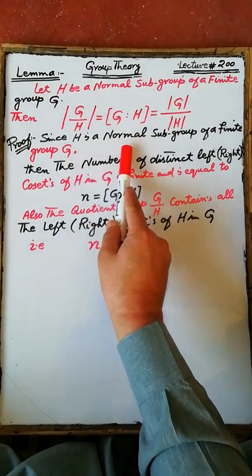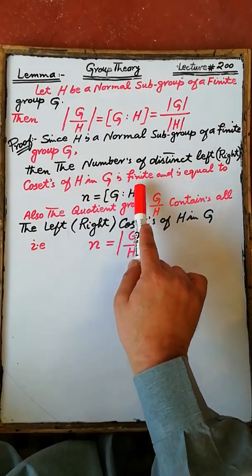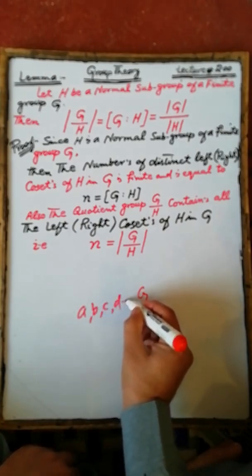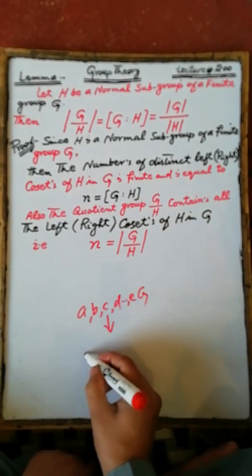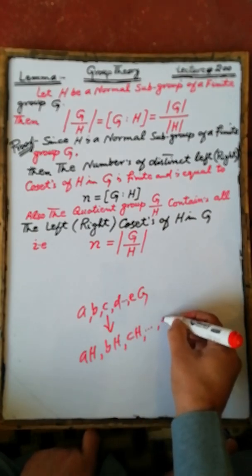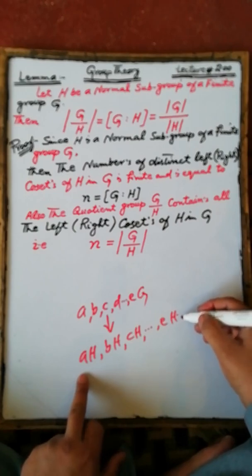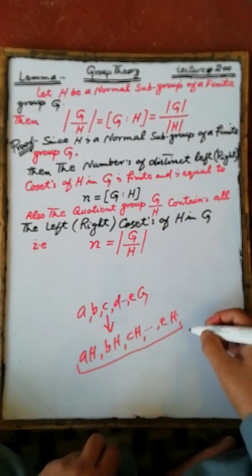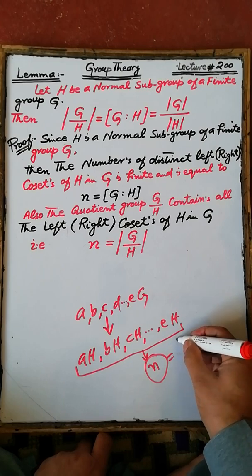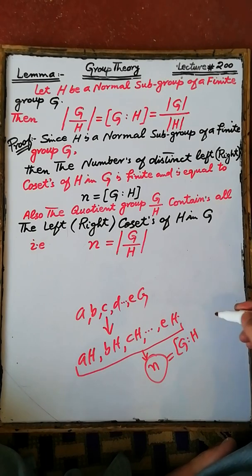Since H is a normal subgroup of a finite group G, the number of distinct left or right cosets of H in G is also finite, because the elements of G are finite. Therefore the number of left or right cosets determined by elements of G is also finite. Suppose the number of left or right cosets determined by H in G is equal to n.